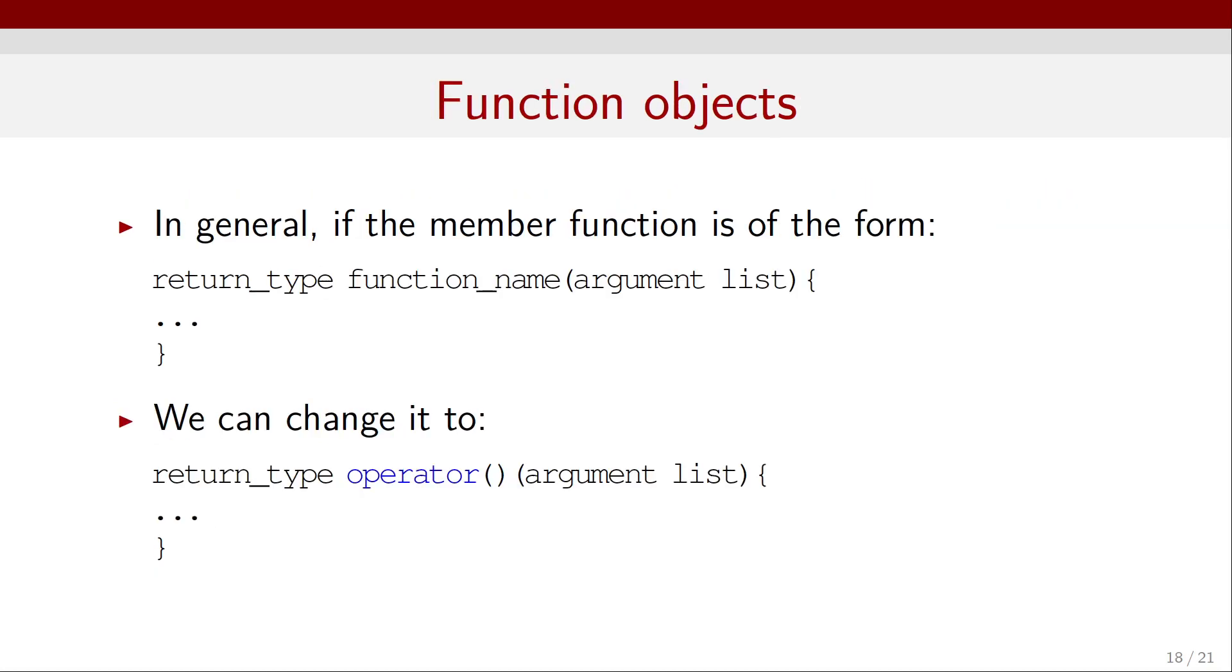Now, we want to simplify the syntax for calling a member function. In general, if the member function is of this form - first the return type such as double, then the function name, then the list of arguments, and then we define the function in curly braces - we can change this member function to return type, again this could be double, and then instead of the function name, we just have operator, the command operator, with round brackets or parentheses, and then the same argument list, and then in curly braces we define the function.